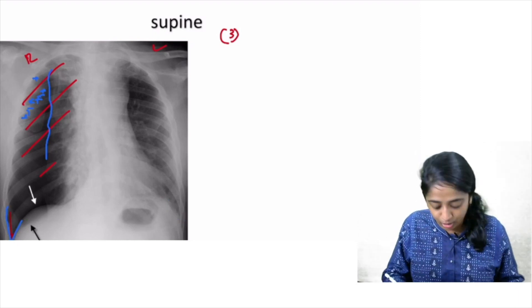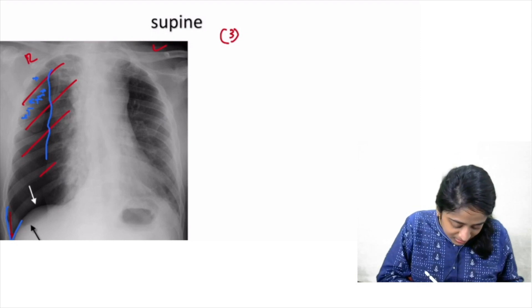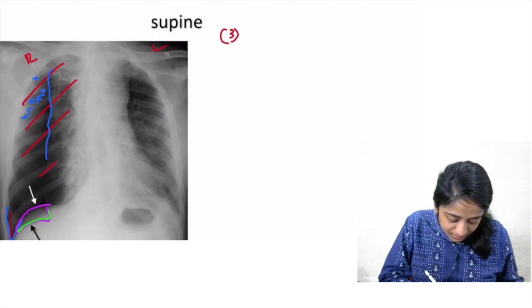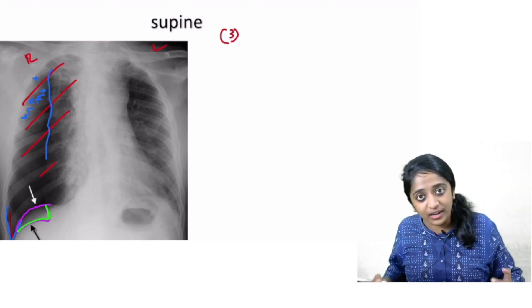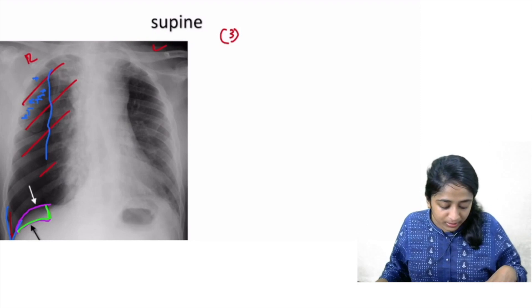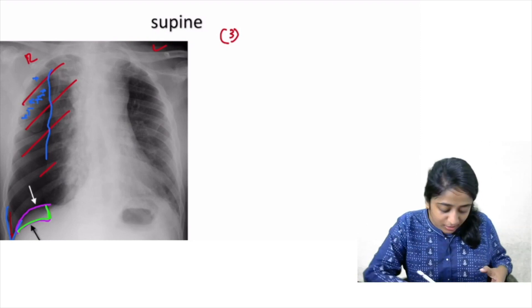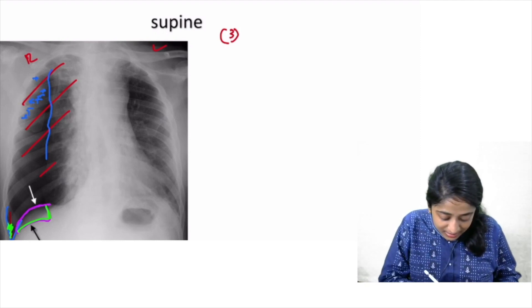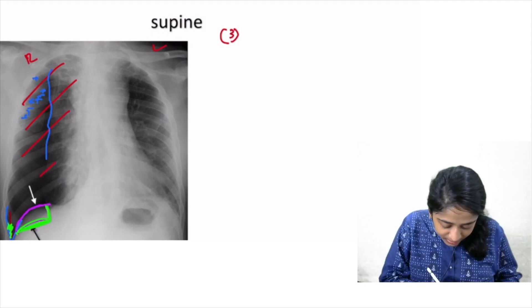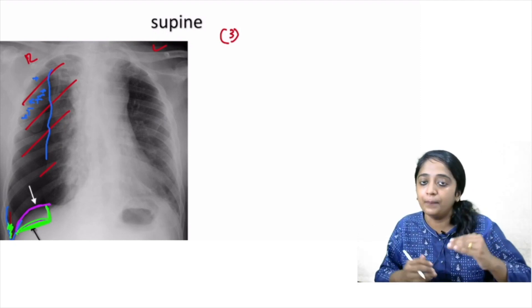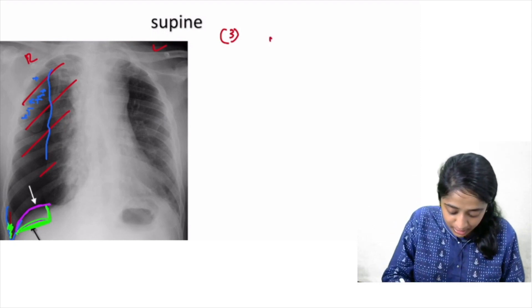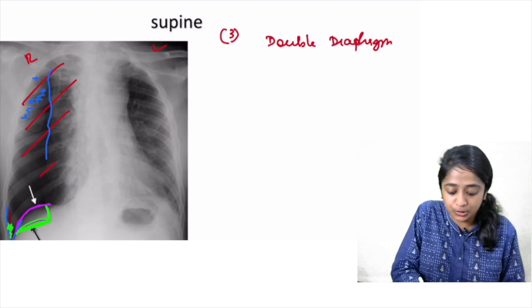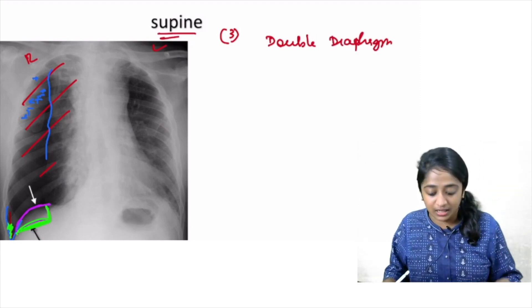And furthermore importantly, what do you see? I am seeing double diaphragmatic contour. This over here and one more lucency like this. Why is it so? There is air within the pleural cavity that is collecting in the costophrenic angle outlining the dome of the diaphragm as well as the anterior costophrenic recess. So that gives apparent double diaphragmatic contour. So double diaphragm sign is an important sign of pneumothorax on supine radiograph.